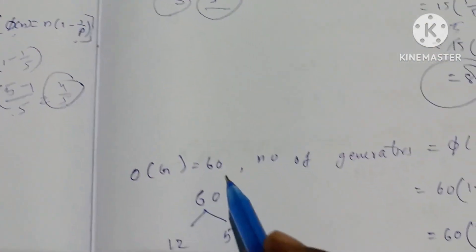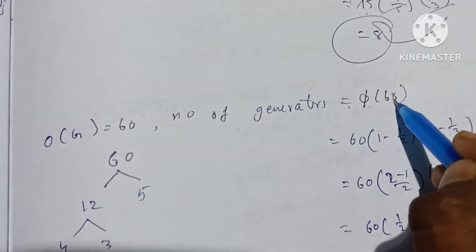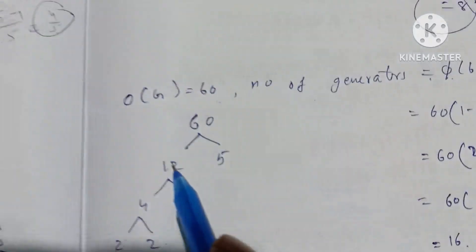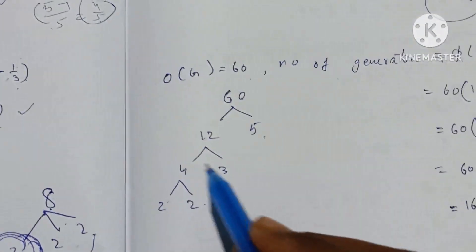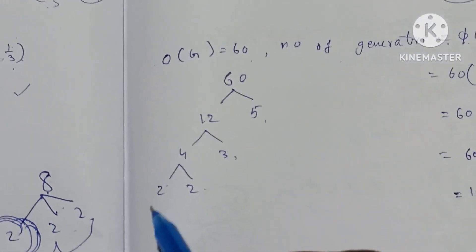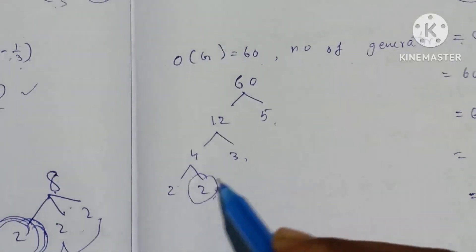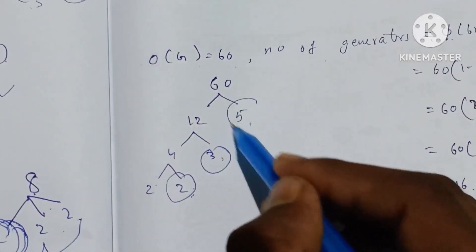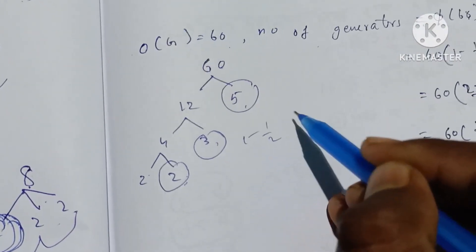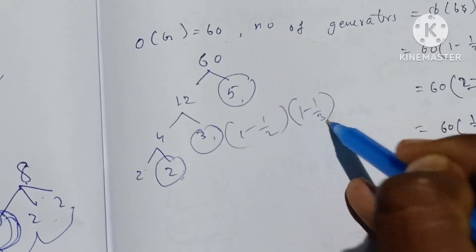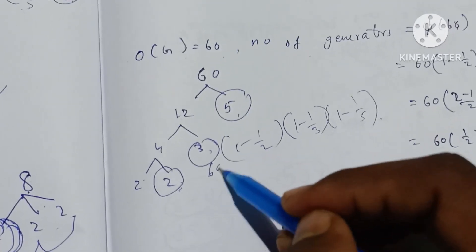Next, order 60. The order of G is equal to 60. Number of generators is equal to φ(60). 60 = 12 into 5; 12 = 4 into 3; 4 = 2 into 2. The distinct prime factors are 2, 3, and 5. So φ(60) = 60 into 1 minus 1 by 2 into 1 minus 1 by 3 into 1 minus 1 by 5.